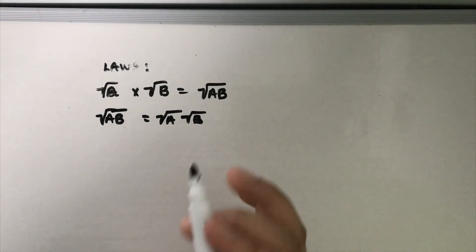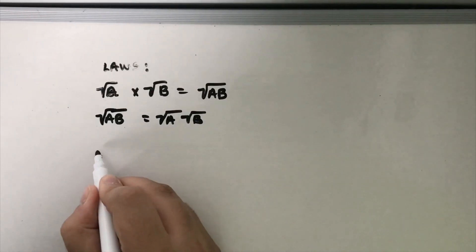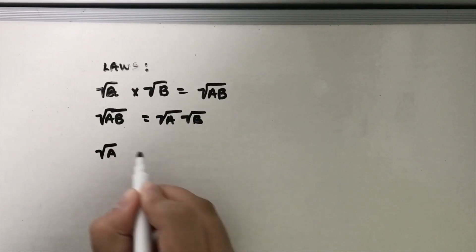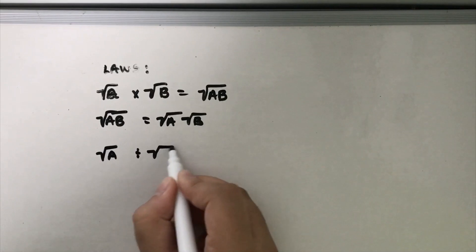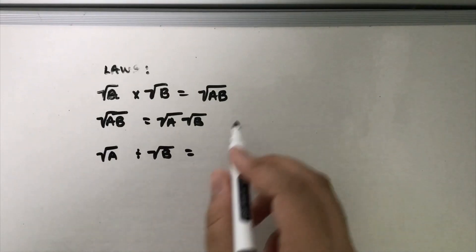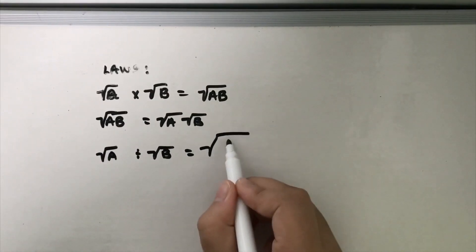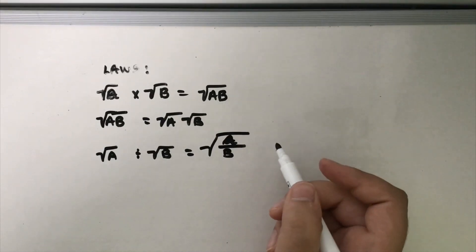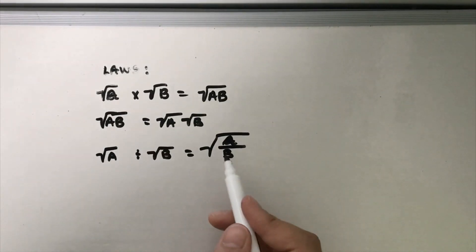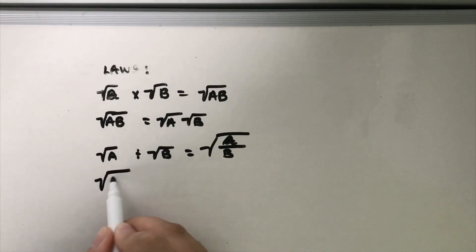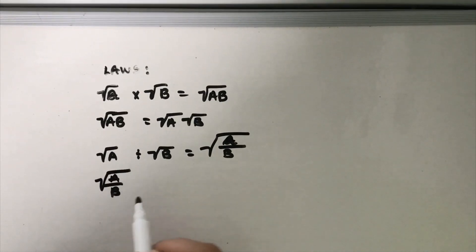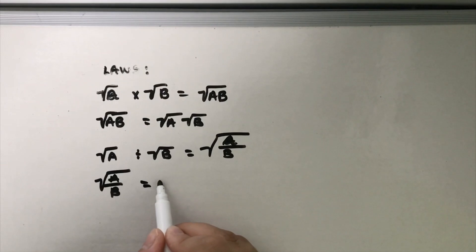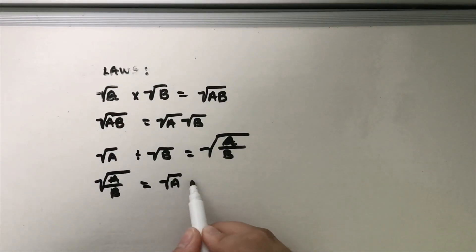Now the second law that you need to know is root A divided by root B gives you, similar to this, root A over B, and again just like before this can be used backwards. Root A over B is equal to root A divided by root B.